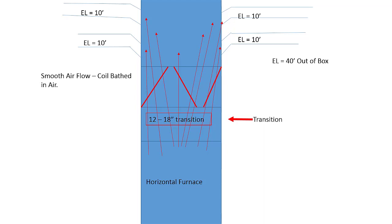And you will also notice that we have added a 12 to 18 inch transition, which allows the airflow to spread out and smooth before it enters the coil. This gives us a much smoother transition out of the furnace, through the coil, and into the ductwork.